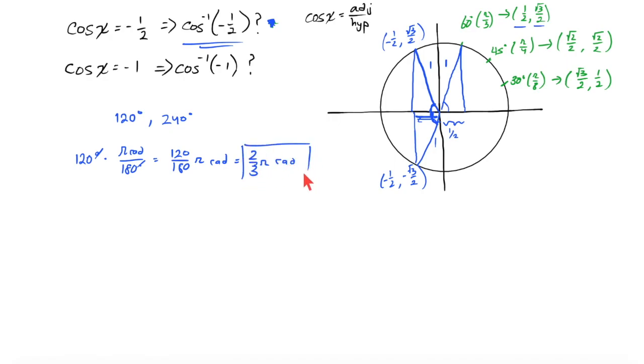All right, that's one of them. The other one is 240 degrees, and for that we're just going to get 240 over 180 pi radians, in other words four-thirds pi radians.